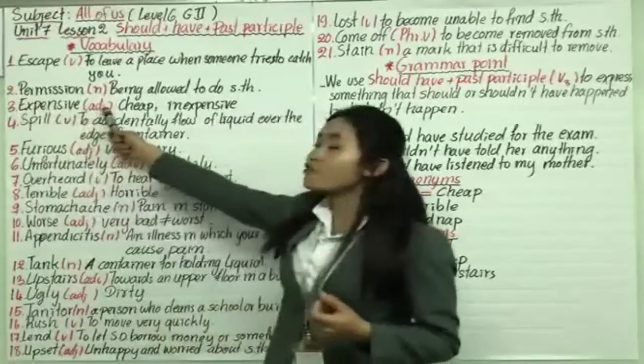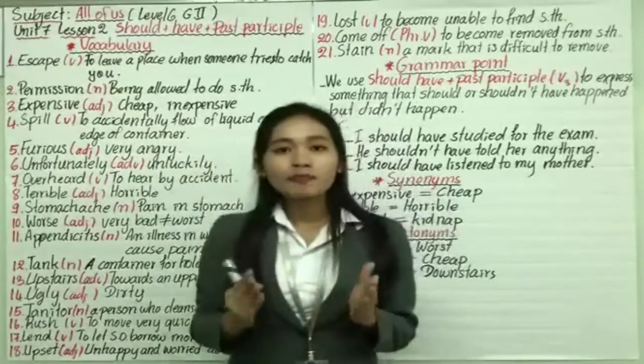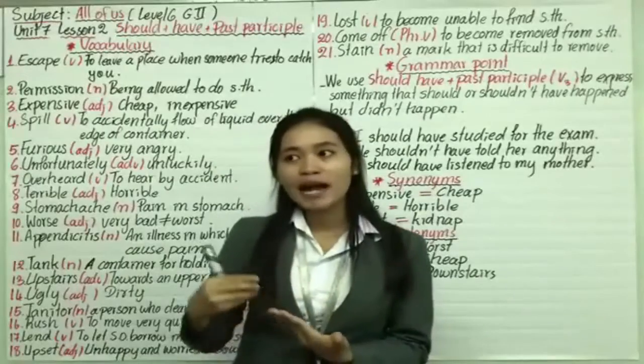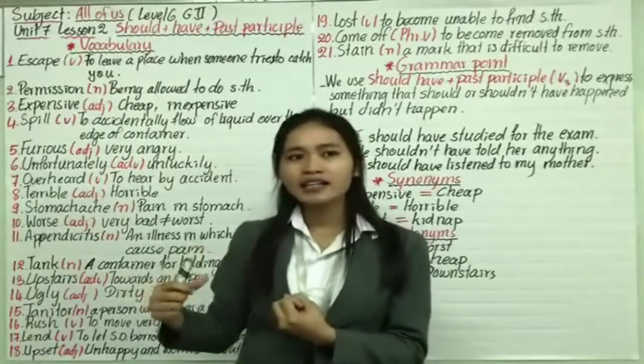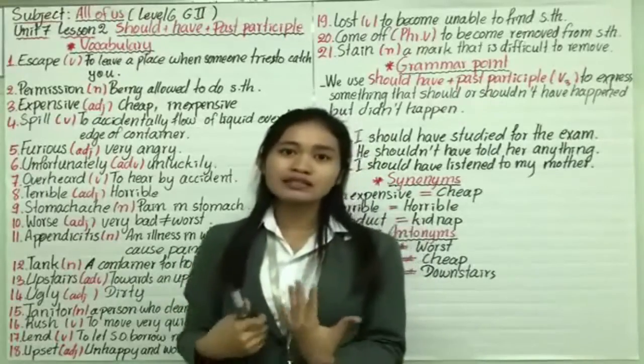Number three is expensive. Function is adjective. It means not cheap or inexpensive. Expensive means you use your money to pay for something at a higher price. For example, I buy very expensive clothes.